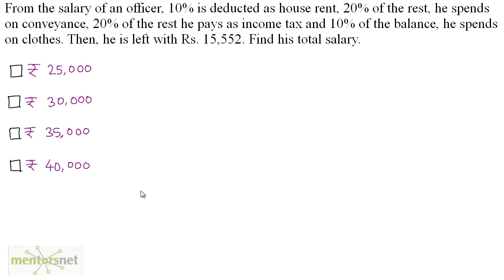From the salary of an officer, 10% is deducted as house rent, 20% of the rest he spends on conveyance, 20% of the rest he pays as income tax, and 10% of the balance he spends on clothes. Then he is left with Rs 15,552. Find his total salary.